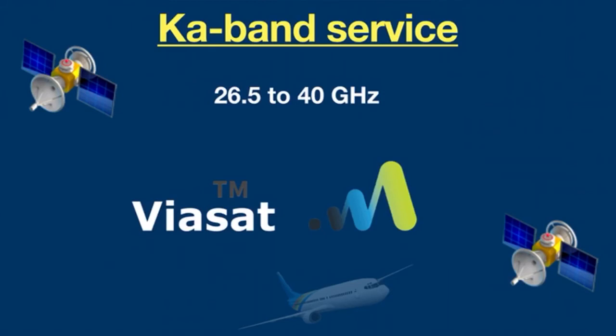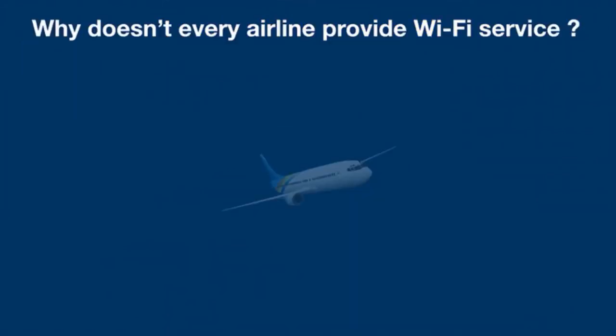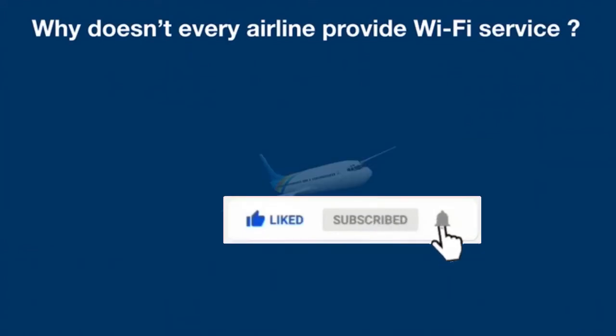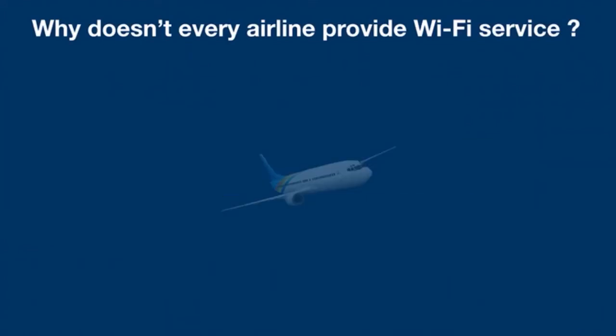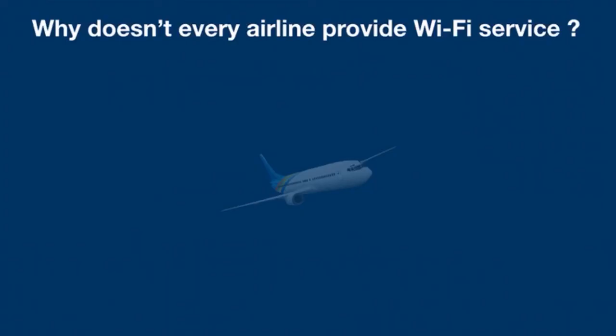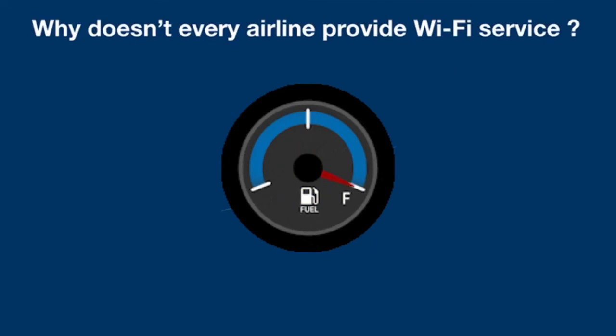These additional satellites are set to increase coverage to North America, South America, Europe, Africa, and Asia — a real game changer for ViaSat. Now, why doesn't every airline provide Wi-Fi? One reason is clear: it is expensive. Many airlines cannot even afford Ku-band services, because the antenna on top of the plane is thick and heavy, requiring aircraft engines to burn excessive fuel to carry the extra weight — more fuel means more money.